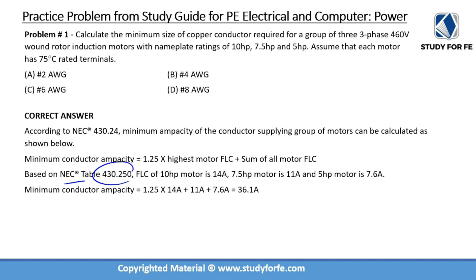We have three-phase motors, which are covered in table 430.250, and FLCs can be extracted from there. The FLC of the 10 horsepower motor is 14 amps, the 7.5 horsepower motor is 11 amps, and the 5 horsepower motor is 7.6 amps. I would recommend you go to the table and verify these values for yourself.